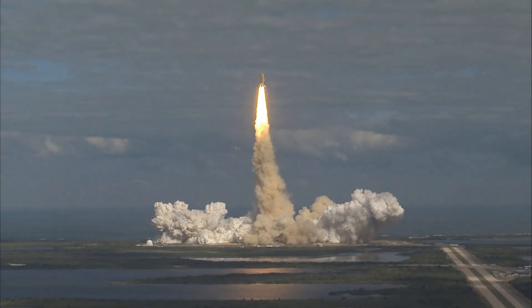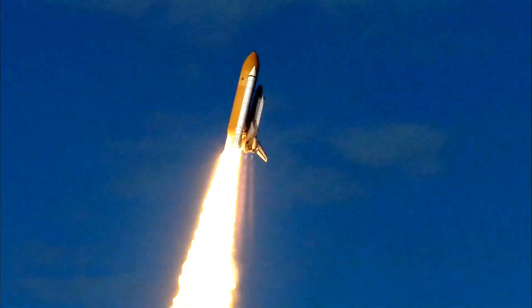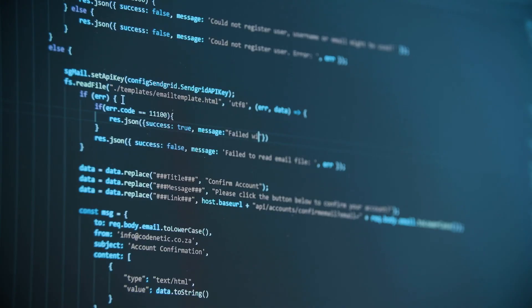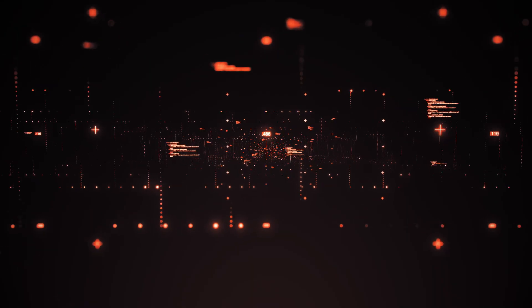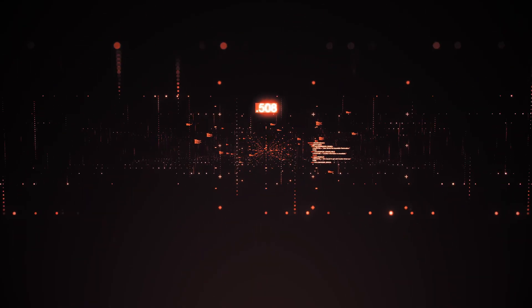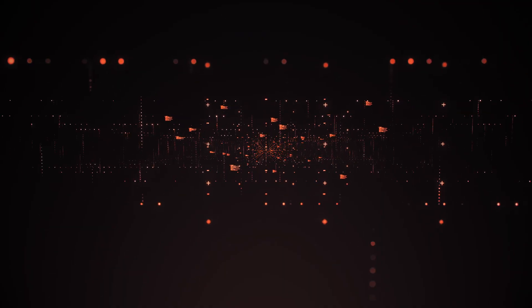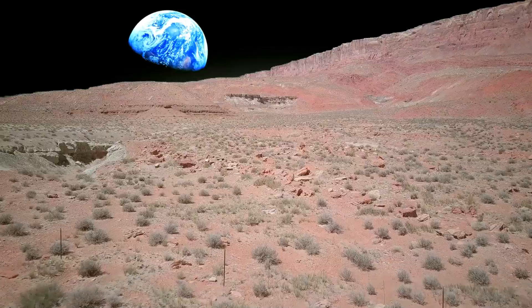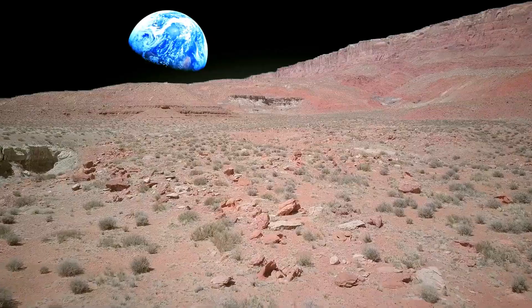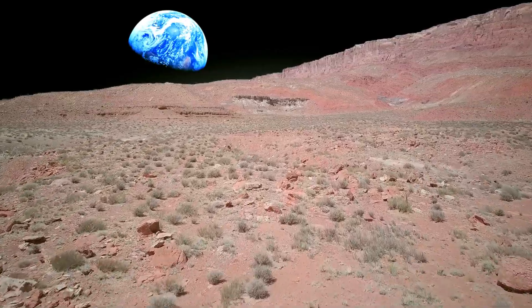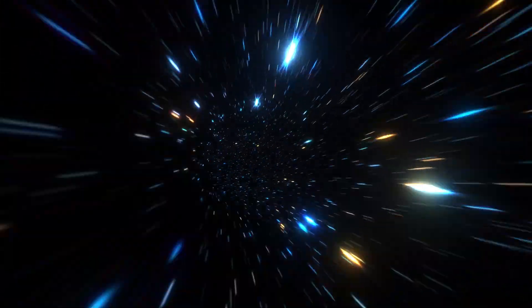The revelation also ripples outward, affecting how we understand similar planets beyond our solar system. Neptune-sized exoplanets, mini-Neptunes and sub-Neptunes, are some of the most common worlds discovered by missions like Kepler and TESS. If our Neptune is this wildly complex and different from prior models, then our assumptions about those distant cousins could be dangerously wrong.